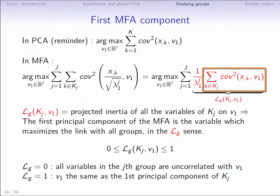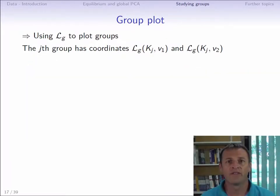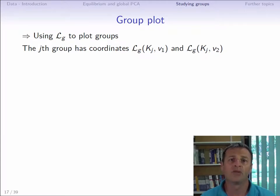The first principal component of the group is, by definition, the variable most linked to all the variables in the group and thus maximizes the sum of the squared covariances. This sum of the squared covariances is equal to the inertia of the first principal component, which is the first eigenvalue of the group. Since the variables are weighted by the first eigenvalue of the group, the maximum Lg corresponds to the value 1. This Lg makes it possible to quantify the link between a variable and a group of variables, and can therefore be used to quantify the link between a group of variables and a principal component.